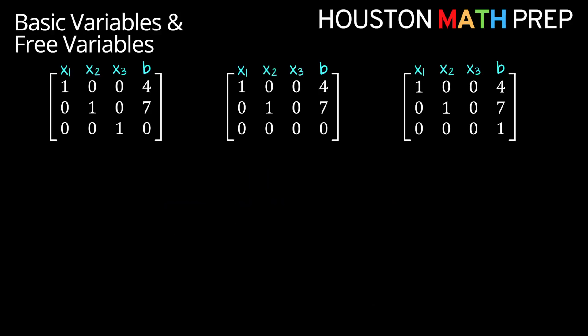Let's make sure that we're okay translating these augmented matrices back into systems of equations. All of these are three by four matrices, so if we think of these as augmented matrices, then the first three columns in each represent the coefficients of our variables, and the last column represents the constant on the other side of the equation. We've intentionally made the first two rows of each matrix the same, and we'll see they can still have very different solutions.